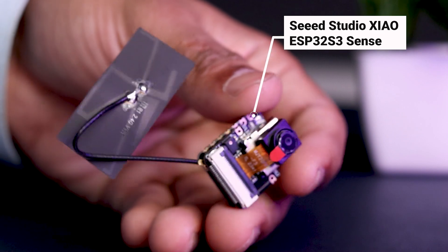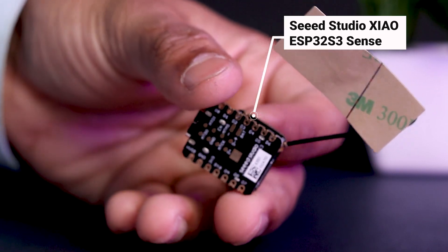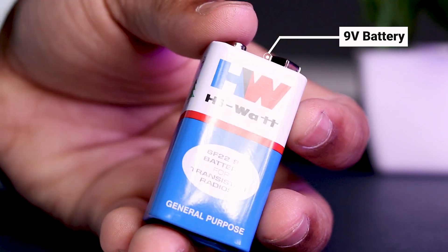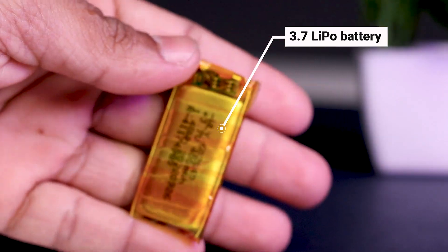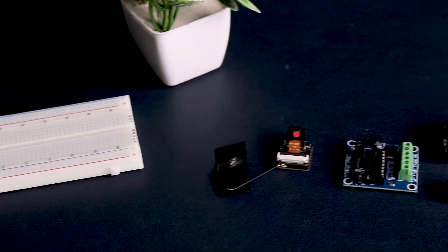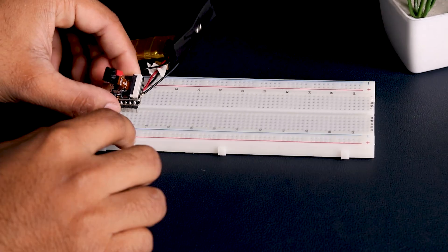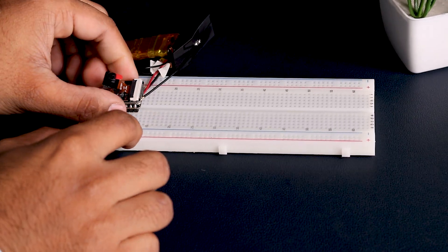We will need a Xiao ESP32-S3 Sense board, LM293D motor driver, 9V battery, 2N20 motors, and a LiPo battery, along with some patience and effort. We have all the components on the table, so let's start the circuit assembly.